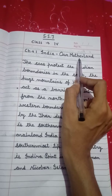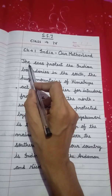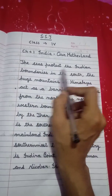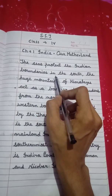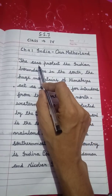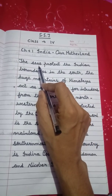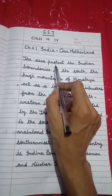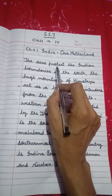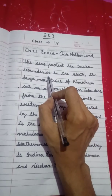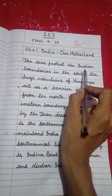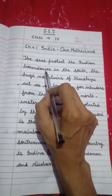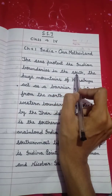Now let's start the next part. The seas protect the Indian boundaries in the South. Sea का means क्या होता है? समुन्द्र। Protect का means क्या होता है? सुरक्षित — write down this word. The Indian boundaries — boundaries का means क्या होता है? सिमाओं।